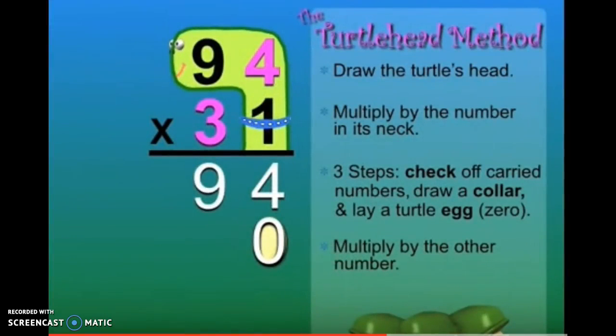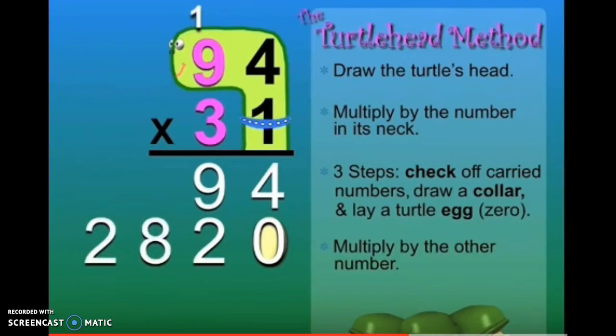3 times 4 equals 12. So we'll write the 2 and carry the 1 to the next column. 3 times 9 equals 27. Plus 1 is 28.